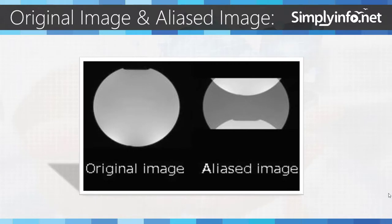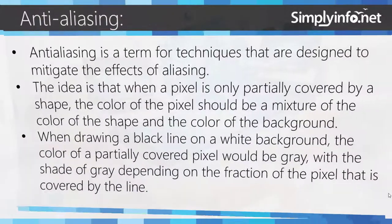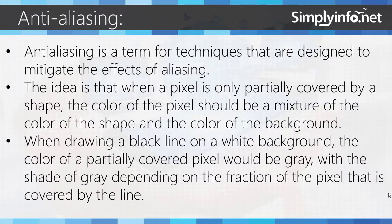Here is a comparison between the original image and an aliased image. Anti-aliasing is a term for techniques that are designed to mitigate the effects of aliasing. The idea is that when a pixel is only partially covered by a shape, the color of the pixel should be a mixture of the color of the shape and the color of the background.